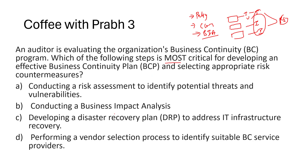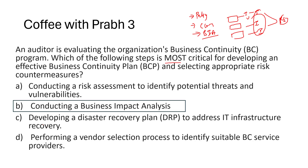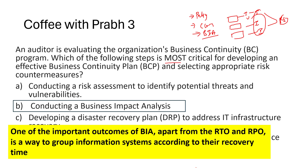Option B, conducting BIA, definitely helps you prioritize what is important. Option C, developing a disaster recovery plan to address IT infrastructure recovery, is required but needs data from BIA first. Option D, performing a vendor selection process, is the external part. DRP and vendor selection are specific recovery strategies done after BIA has identified critical resources. The auditor is evaluating the BCP, so the most critical step for developing an effective BCP is BIA — BIA is the brain of BCP. BIA also groups information systems according to recovery time.